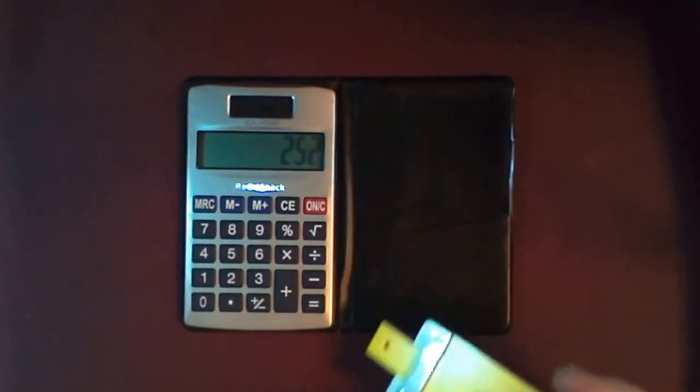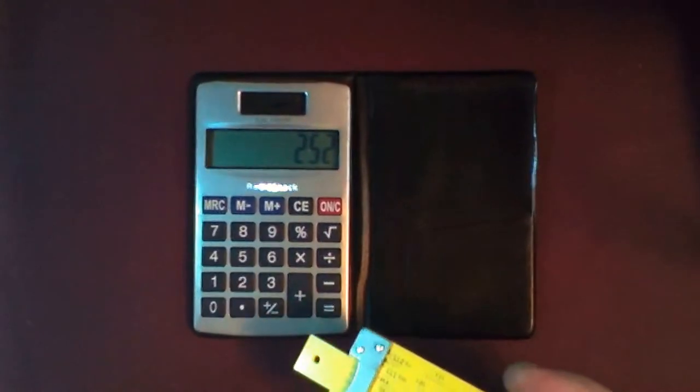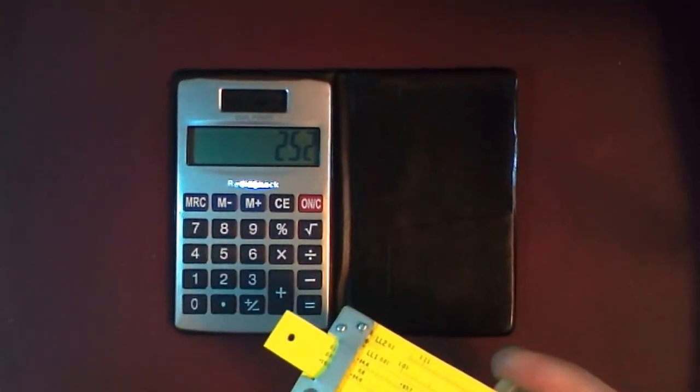Finally, the equals, 252. This is how I use the slide rule to multiply 42 times 6.